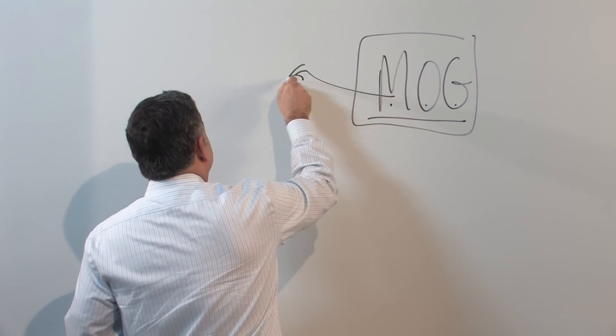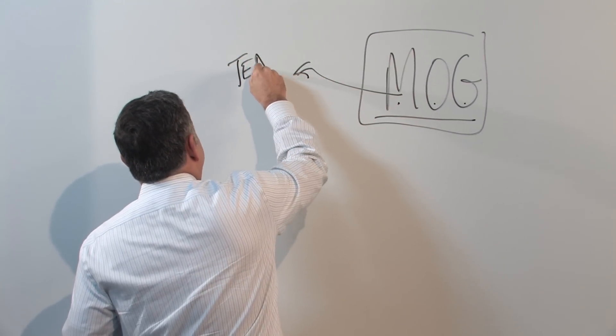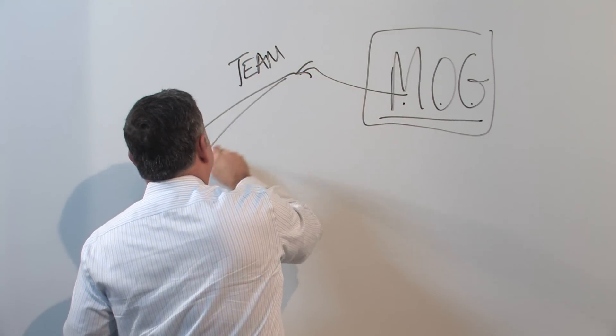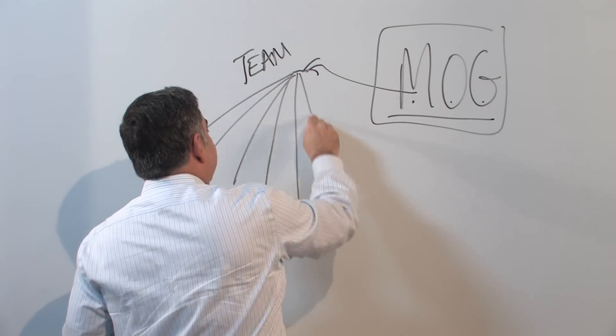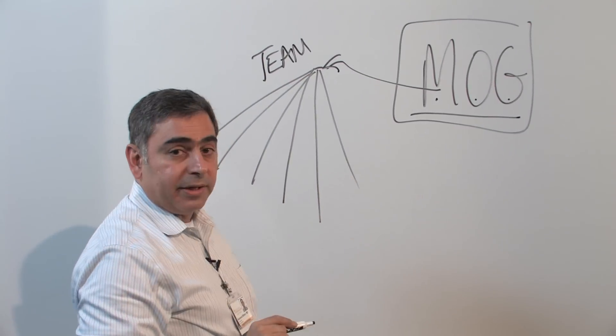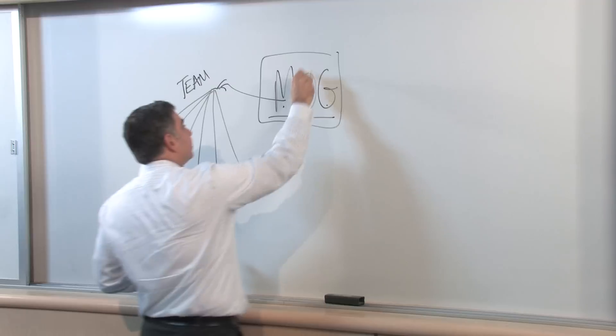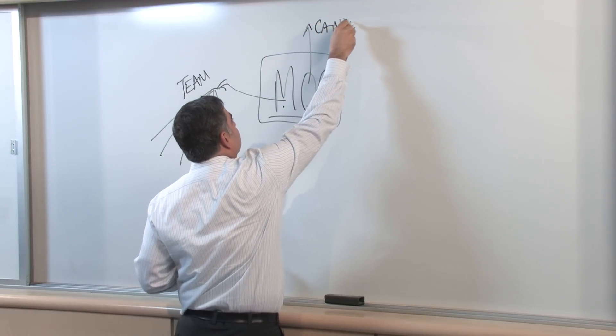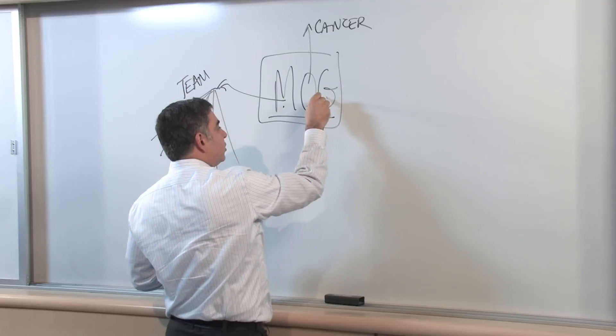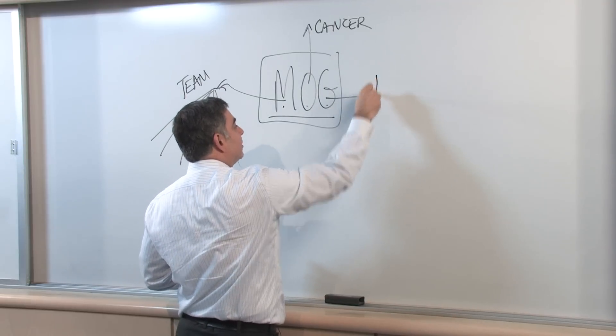Multidisciplinary is a team. It's a diverse team of players and members that I will explain in a little bit. Oncology is cancer. And G is group or dedicated.